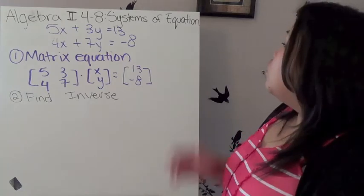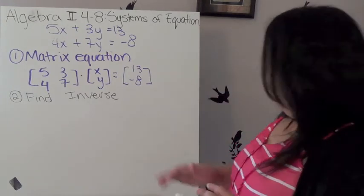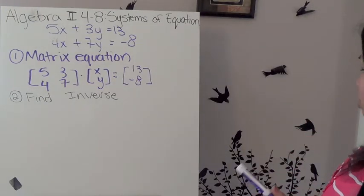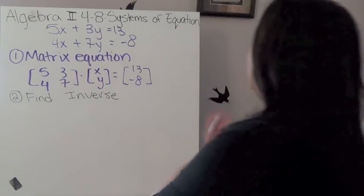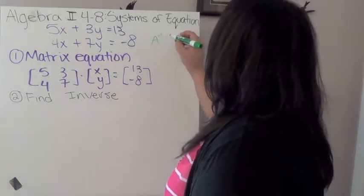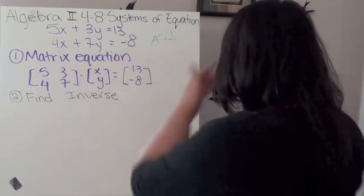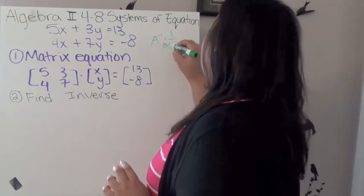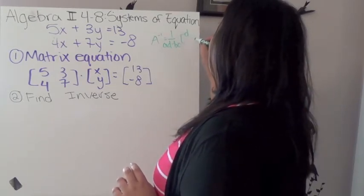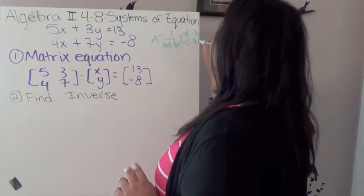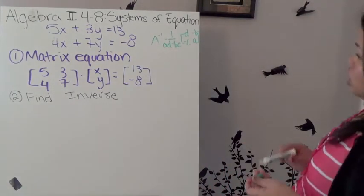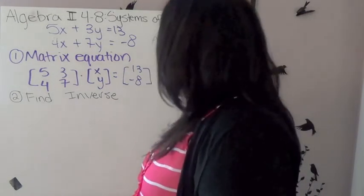So we're going to start off with an example. Basically, in order for you to properly do this, you need the equation for how to find the inverse. So if we go back to the last section, the inverse is A^-1 equals 1 over AD minus BC, and this is [D, -C; -B, A]. If you can't see that, just go ahead and go into your notes and find the inverse.